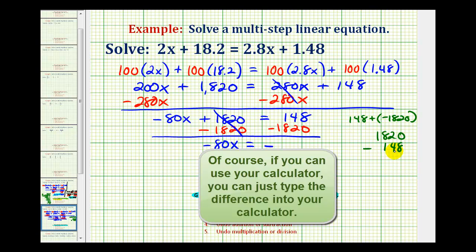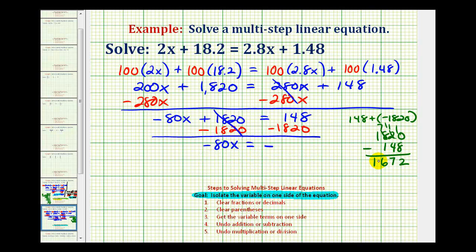So here we have to borrow. 10 minus 8 is 2, borrow. We have 11 minus 4, that's 7. And here we have 7 minus 1, that's 6, and 1. But remember we already determined that this sum, which is the same as this difference, is going to be negative. So we have negative 1672.